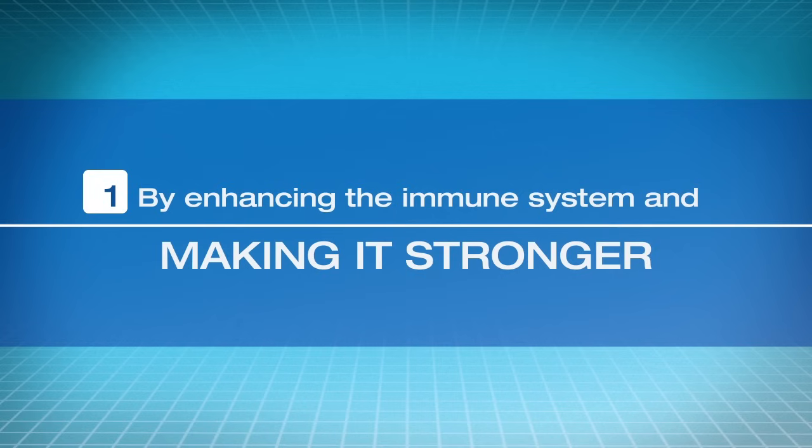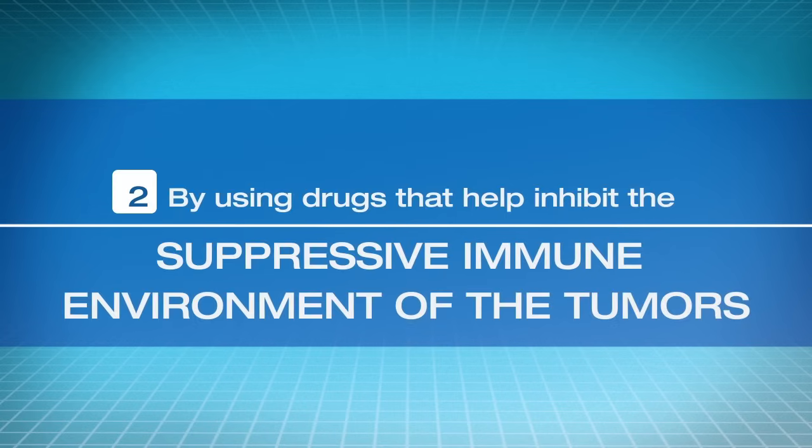Immunotherapy functions in two primary ways, by enhancing the immune system and making them stronger, and by using drugs that help inhibit the suppressive immune environment of the tumors.